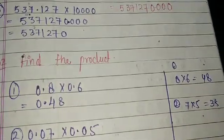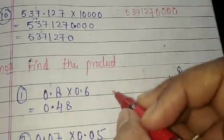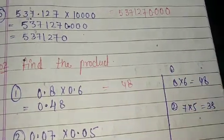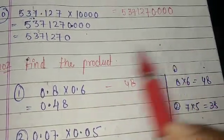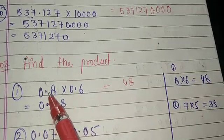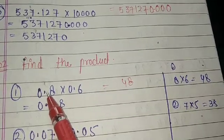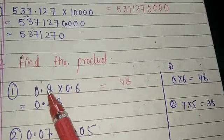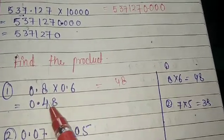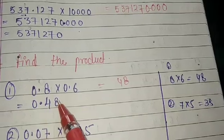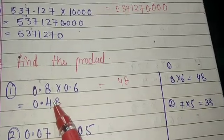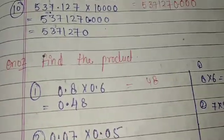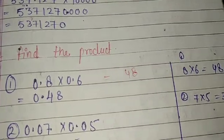I have written 48. Now count how many digits are after the decimal points in both numbers: 1 point, 2 points — total 2 decimal digits. So I write 2 digits after the point: answer is 0.48. Leading zero before decimal is fine.